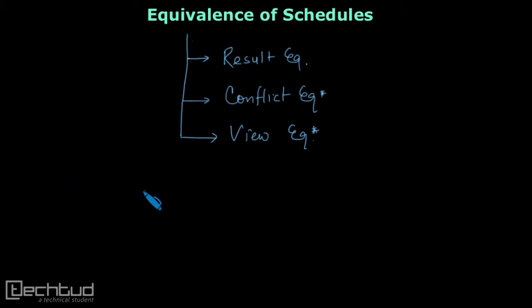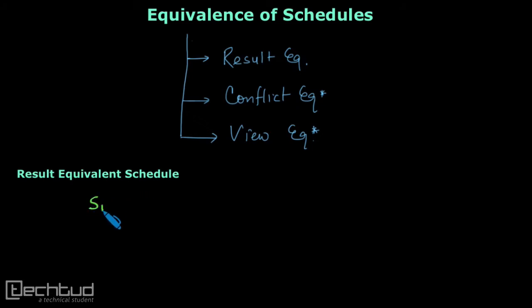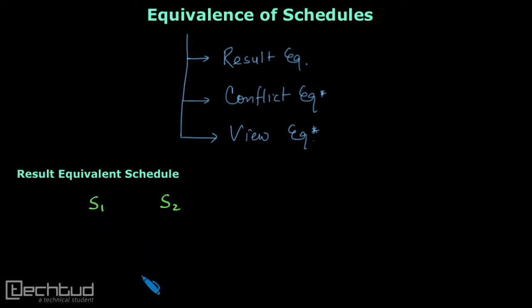When two schedules S1 and S2 are executed and they both lead to the same database state — that is, the same result — we say that these are result equivalent.